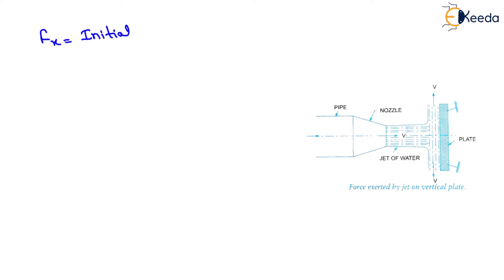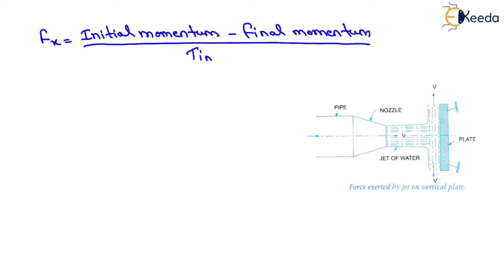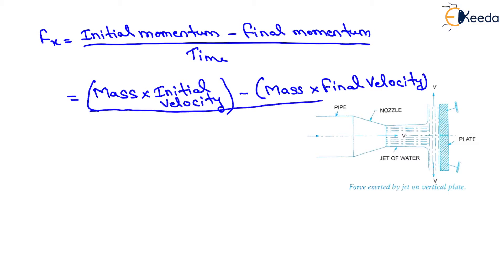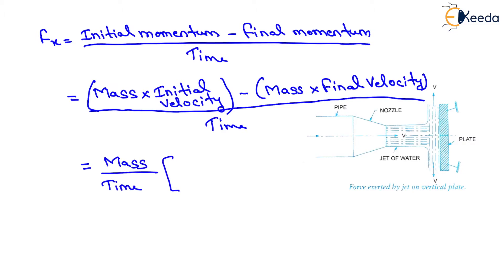So we will write fx equals to initial momentum minus final momentum divided by time. So initial momentum will be equals to mass into initial velocity, and final momentum will be equals to mass into final velocity, divided by time t. We will take mass as common, so it will be equals to mass upon time into initial velocity minus final velocity.